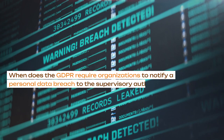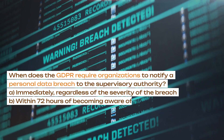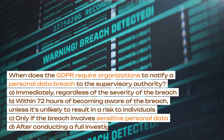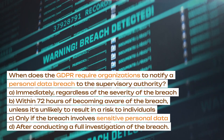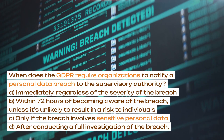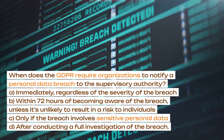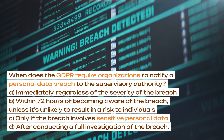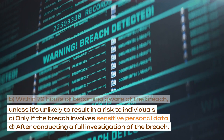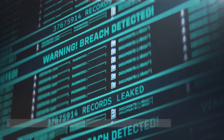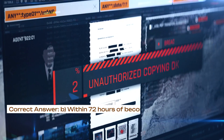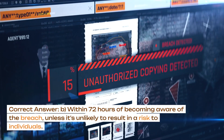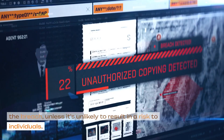When does the GDPR require organizations to notify a personal data breach to the supervisory authority? A. Immediately, regardless of the severity of the breach. B. Within 72 hours of becoming aware of the breach, unless it's unlikely to result in a risk to individuals. C. Only if the breach involves sensitive personal data. D. After conducting a full investigation of the breach. Correct answer: B. Within 72 hours of becoming aware of the breach, unless it's unlikely to result in a risk to individuals.